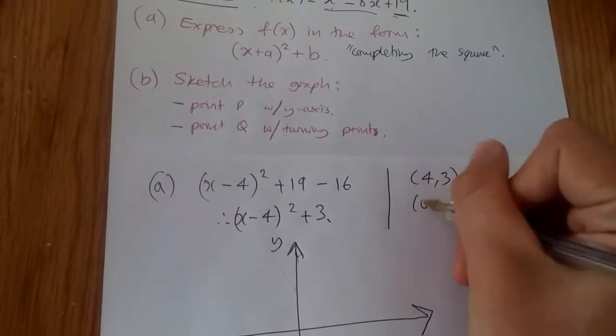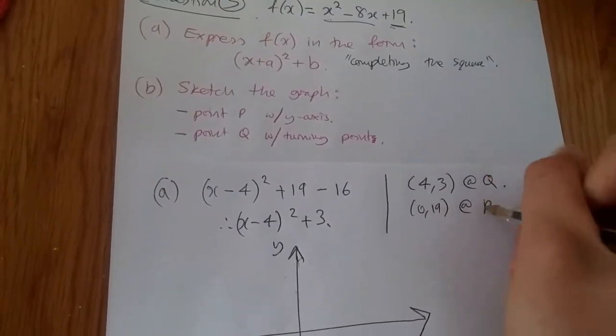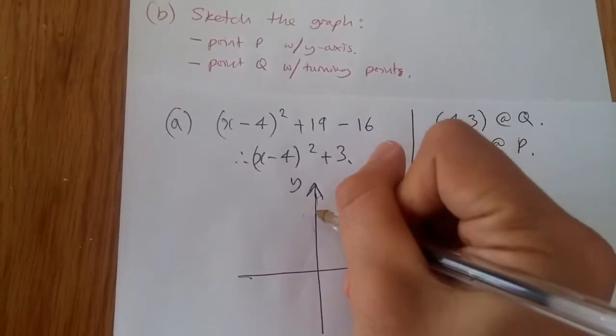So we know it crosses that. 0, 19. Oops. And this is point P. And that's literally it. So we'll just plot it quickly.